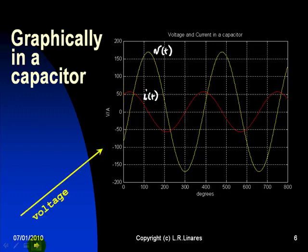Phasorially, we say, if this phasor represents the voltage, the current is represented by a phasor that is 90 degrees ahead of the voltage. And that is always true for the capacitor. The current leads by 90 degrees.